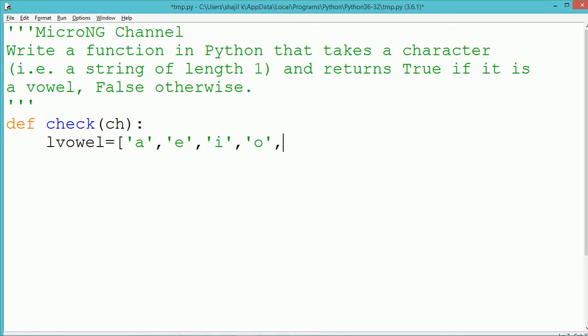We create a list with all the elements of vowels, lowercase vowels A, E, I, O, U, and stored inside a list variable lvowel. Similarly we create another list with all uppercase vowels. The list is saved in the variable uvowel, indicates the upper vowel characters.